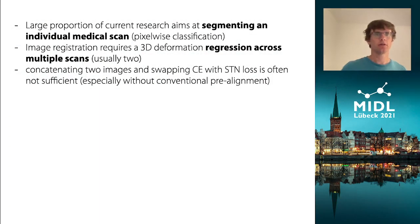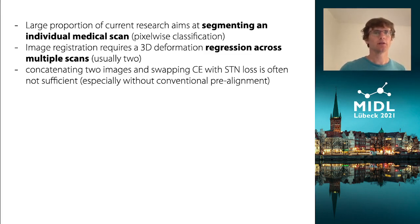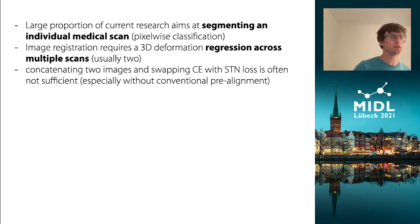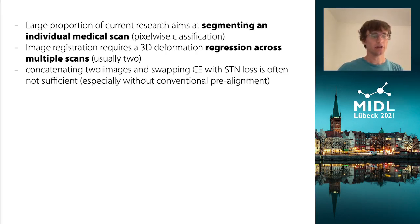The vast amount of current research towards medical imaging aims at segmenting individual medical scans, meaning a pixel-wise classification. But image registration is quite different — it requires us to estimate a 3D deformation field, a regression across multiple scans, usually two. Just concatenating two images and swapping cross-entropy with a spatial transformer loss is usually not sufficient, especially when not considering conventional pre-alignment, affine or rigid.